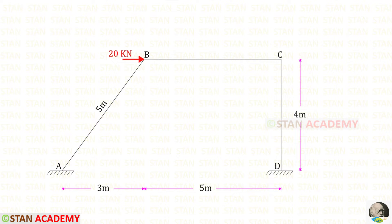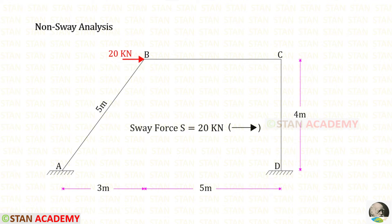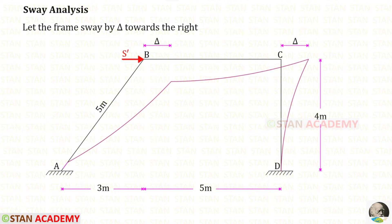Since this frame is subjected to sway, we have to do the analysis two times: first the non-sway analysis and then the sway analysis. Now let us start the non-sway analysis. In this frame there is no member load, but we have a nodal point load at joint B. Since there is no other load, we can directly take this load as the sway force S, and the sway force will be acting towards the right side. Now let us start the sway analysis.